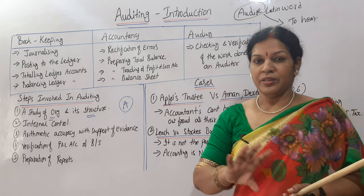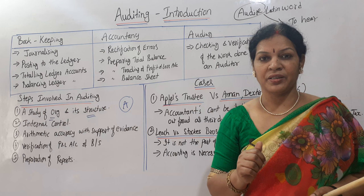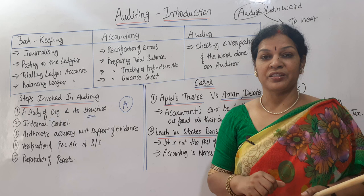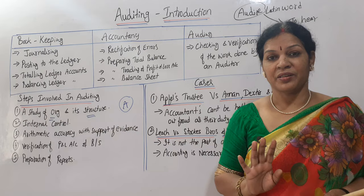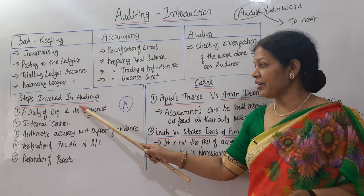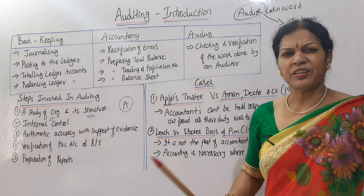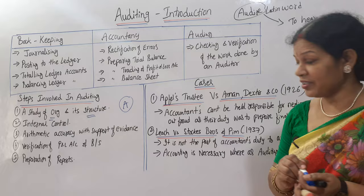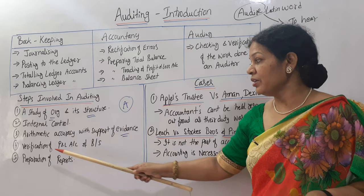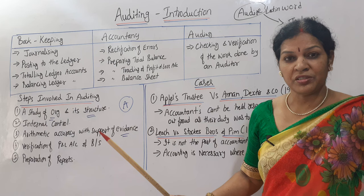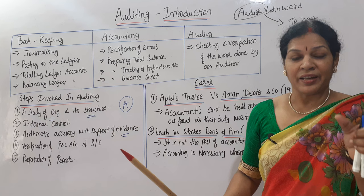Once the auditor knows the organization clearly, the first step is over. The second step is understanding the internal control system — who is working, whom to meet, and how the company controls its system. The third step is arithmetic accuracy with support of evidence. The auditor checks that calculations are correct and that every transaction is supported by evidence — vouchers, bills, or receipts. Without support of evidence, no auditing can be done.